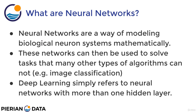So what are neural networks? We'll go into much more detail about how neural networks are constructed in the next section of the course. For the basics, neural networks are a way of modeling biological neuron systems mathematically. These networks can then be used to solve tasks that many other types of algorithms can't — for example, image classification. It's really hard for other machine learning algorithms to perform well on image classification, and this is the kind of task where neural networks perform very well.